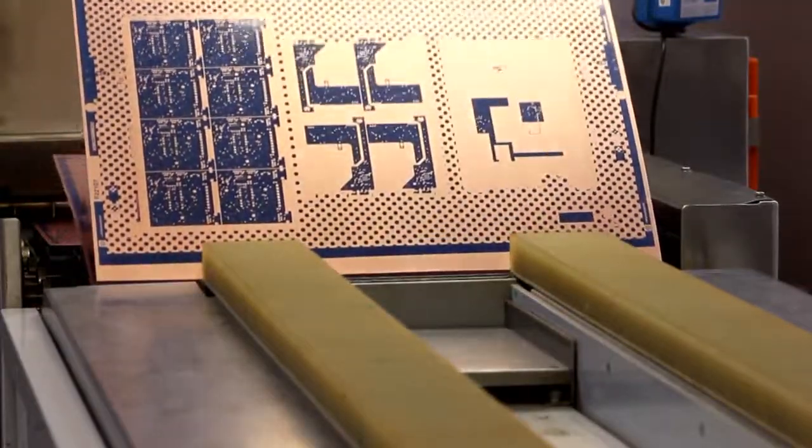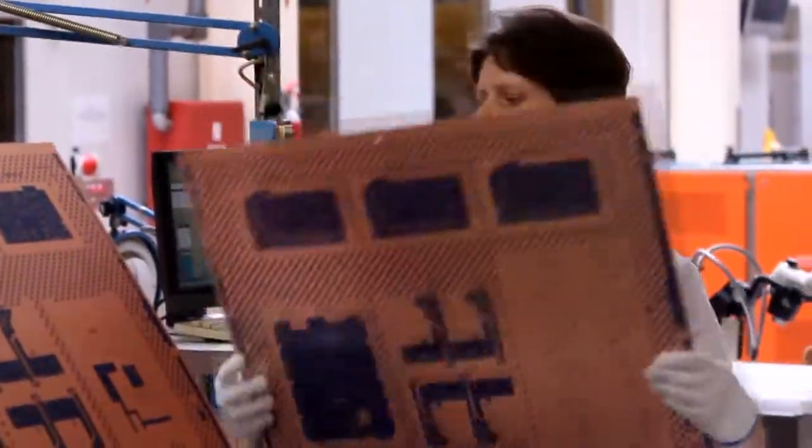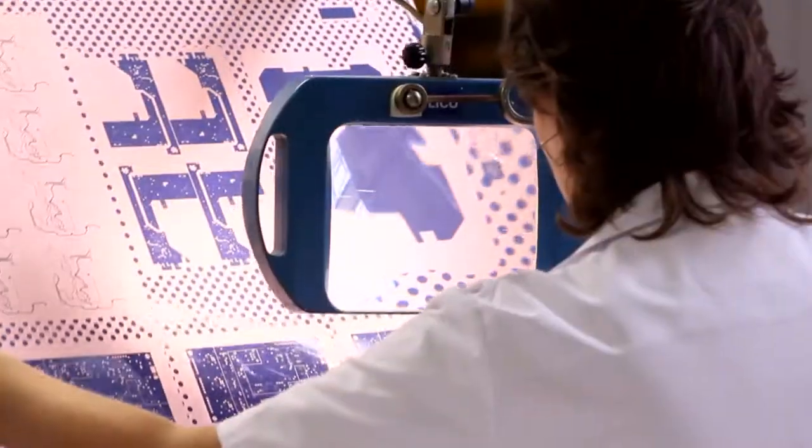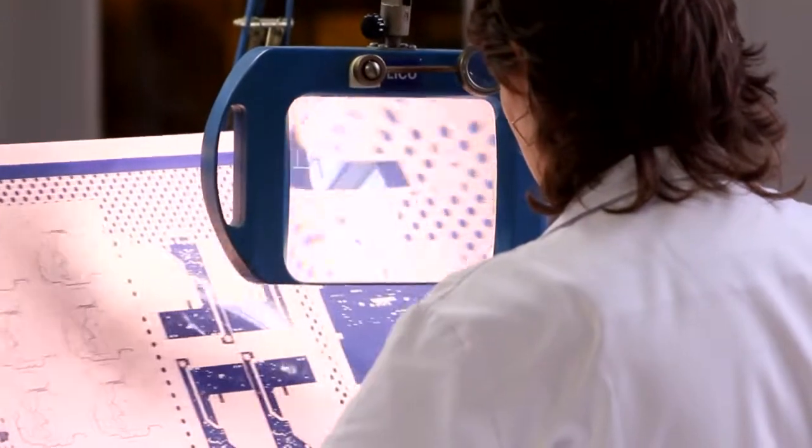The operator checks a sample of the panels to make sure that the copper surface is clean and all the unwanted resist has been removed. You can now see in the blue resist what will be the copper on our inner layer panel.